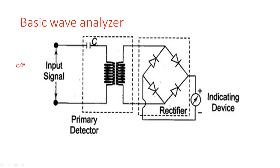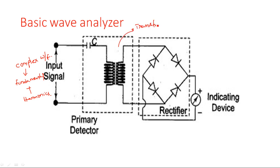The input may be any type of complex waveform — one that consists of a fundamental component plus harmonics. Such a signal is given at the input of this filter. By looking at the diagram, you may name it as a transformer, but it is not only a transformer — it can also work as a filter. It consists of a capacitor followed by an inductor, forming an LC network, and the output frequency is F = 1 / (2π√LC).